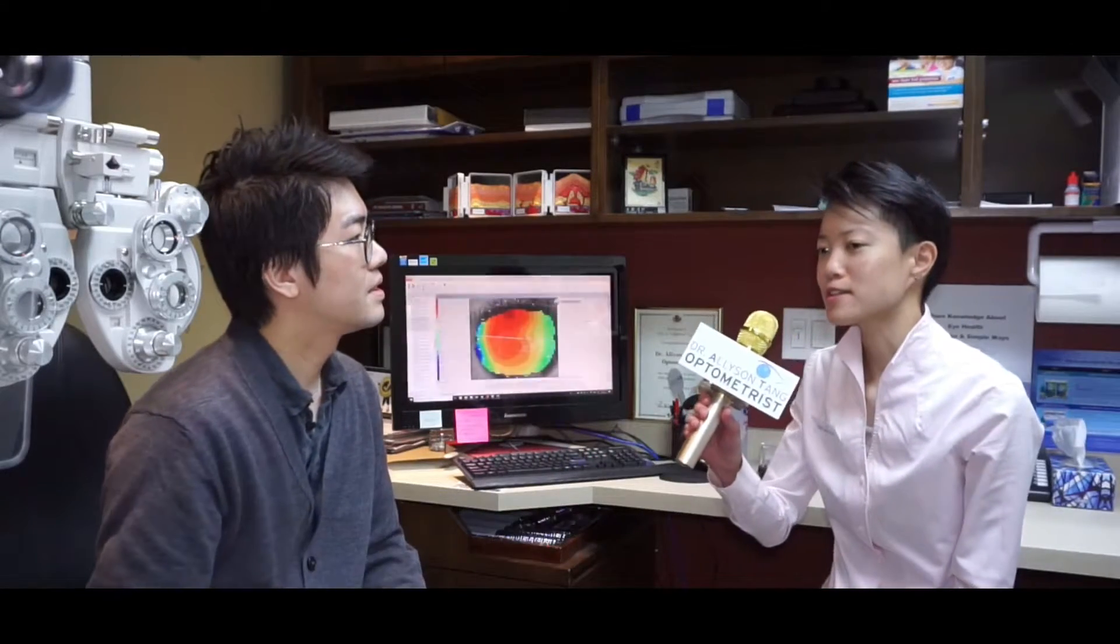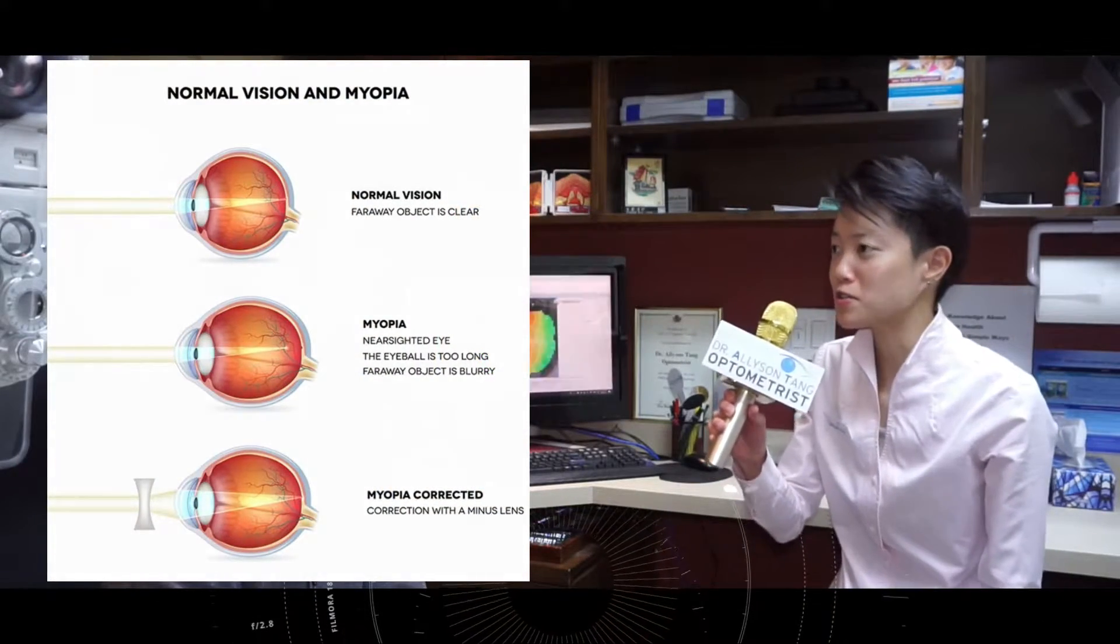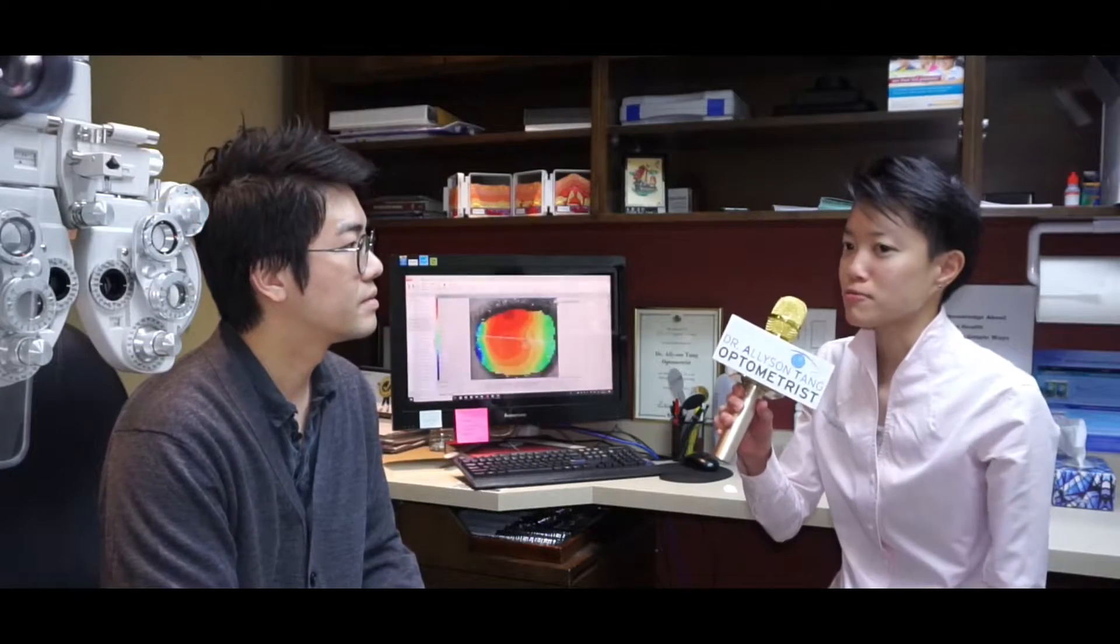Well, no, because there are actually medical changes happening in people who are nearsighted. When the child has nearsightedness, it means their eye is actually longer than average and so tissues inside the eye are stretched thinner and weakened. So it's not only that they see blurry, there's also this medical change happening inside.